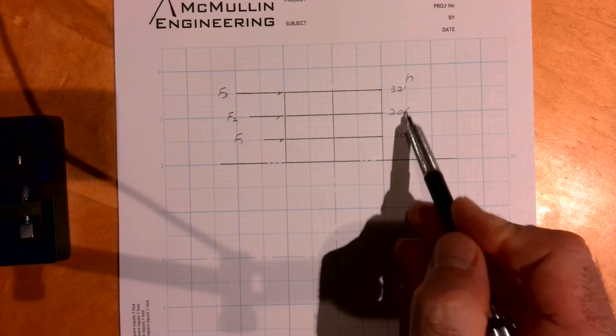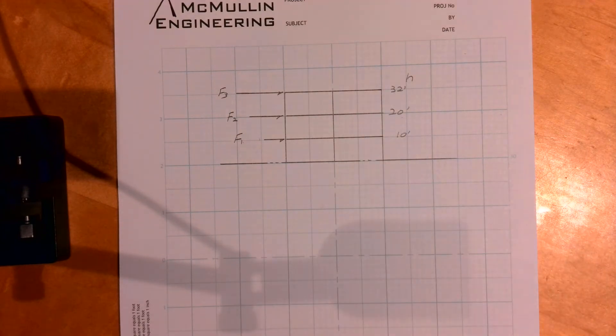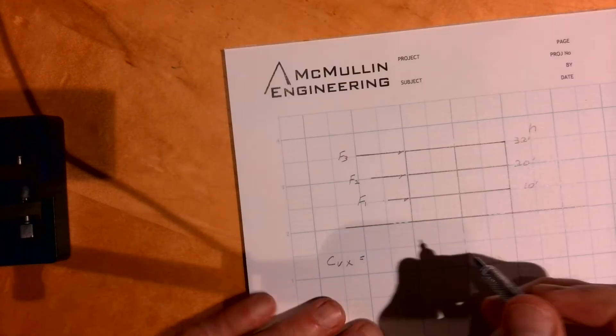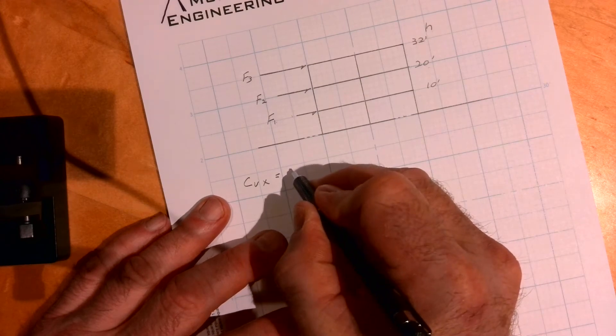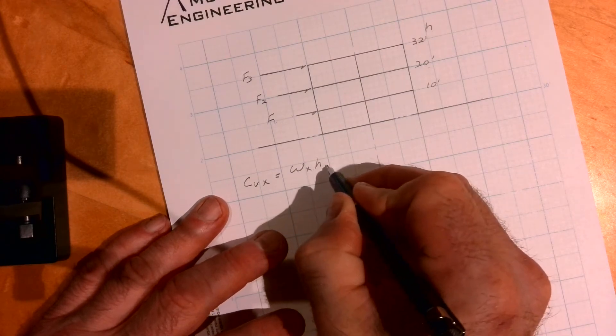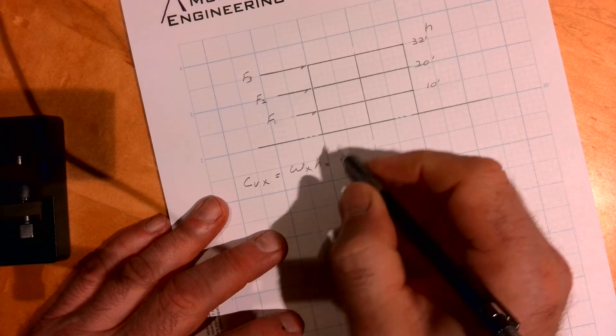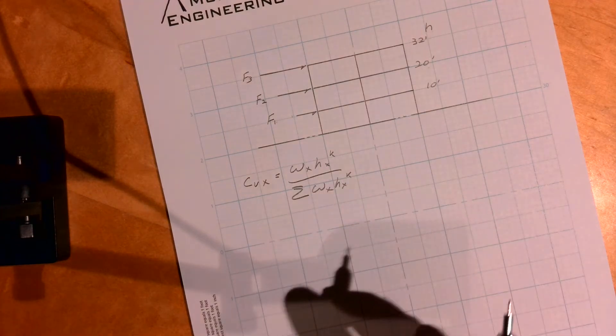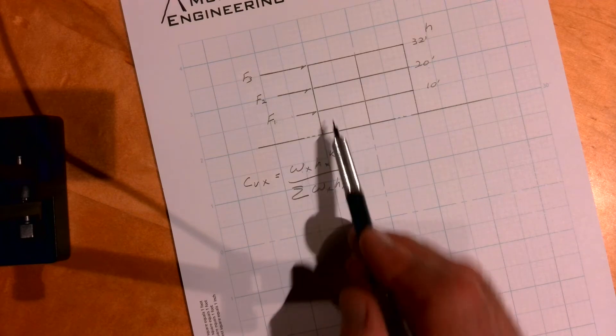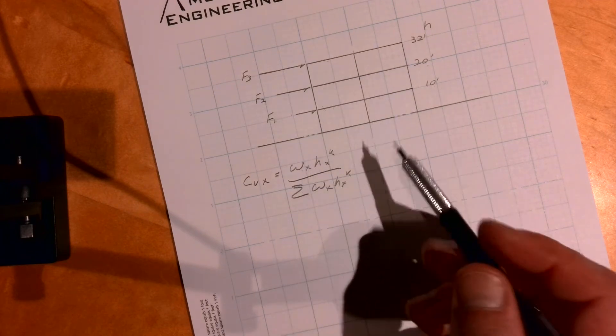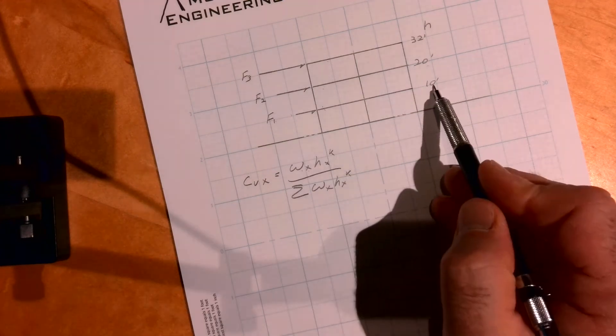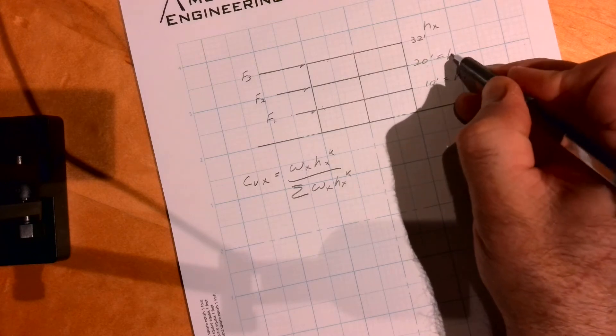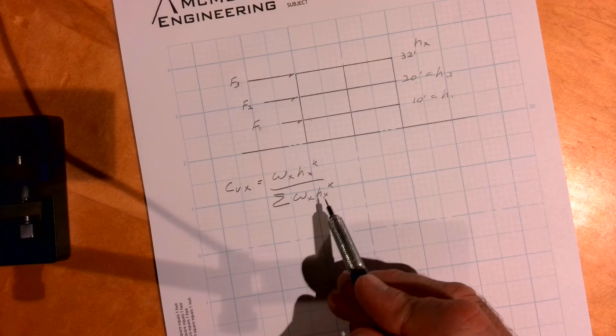And then the height from the ground. So let me write out this equation for CVx. CVx is equal to w h x. This w sub x is the floor weight at each floor, we've made ours the same.